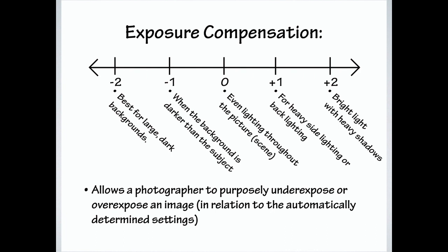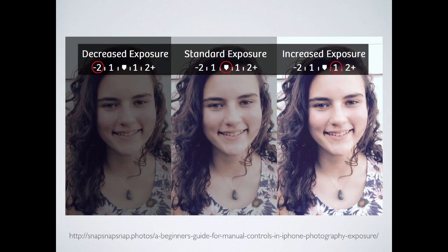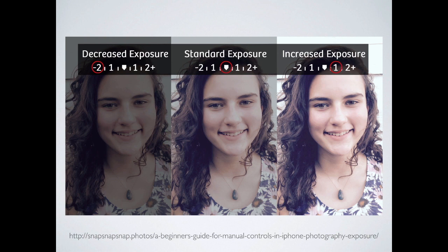Exposure compensation is where you override what the camera thinks is correct. You've all interacted with this on your phones — where you drag to make the image deliberately a little bit darker or lighter. The camera thinks this is right and you say no, make it darker or lighter. Most of the time you go a little bit darker, to minus one or minus two. It's a scale from negative to positive, sometimes in fractions like 0.3 or 0.7.